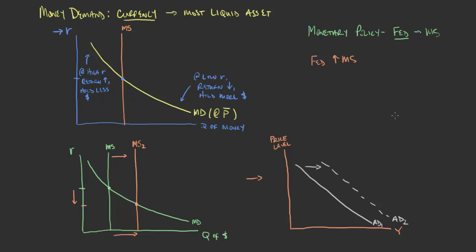In summary, the Federal Reserve can target interest rates because there's a relationship between the interest rate and the money supply. They can increase the money supply, setting a target to lower the interest rate. We typically talk about the interest rate when discussing Federal Reserve policy, since it's harder to track everything going into the money supply. Lowering the interest rate results in increased aggregate demand — a demand shift to the right — because there are more dollars available for consumption.